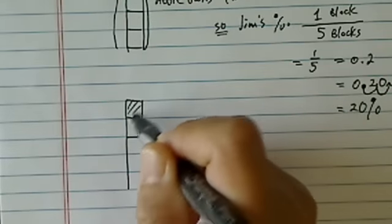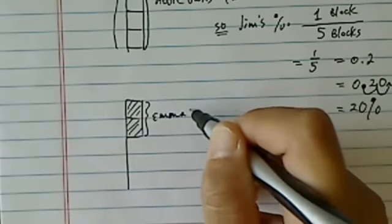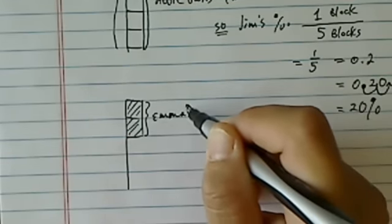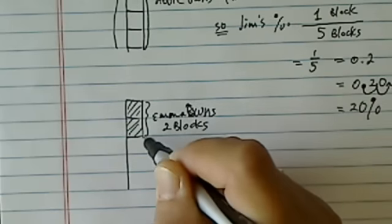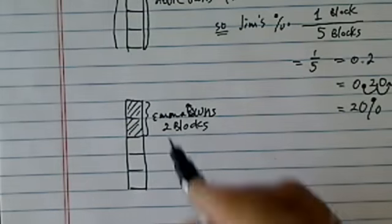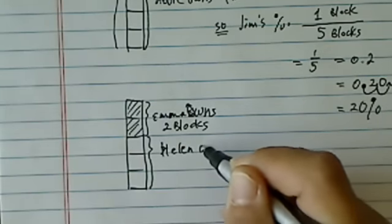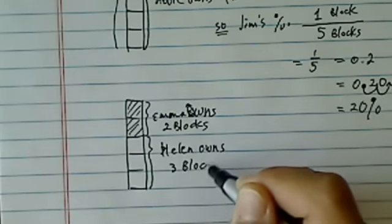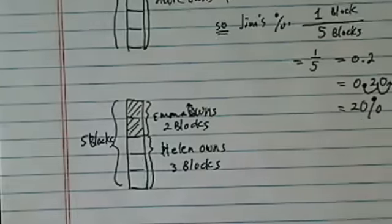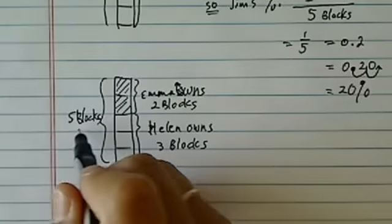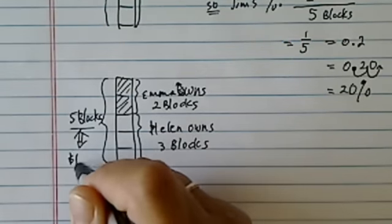For every 2 blocks that Emma owns, Emma owns 2 blocks, and then here we have Helen owns 3 blocks. So all together, we have 5 blocks. Now, it's important that we know all together it's 5 blocks, because this all 5 blocks is also equivalent to $180.